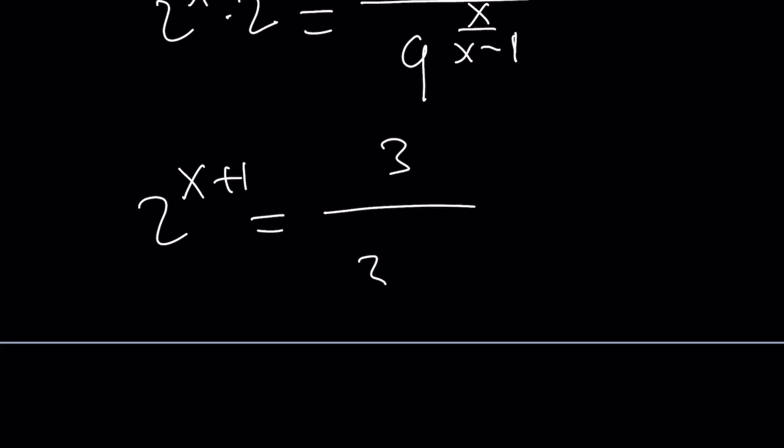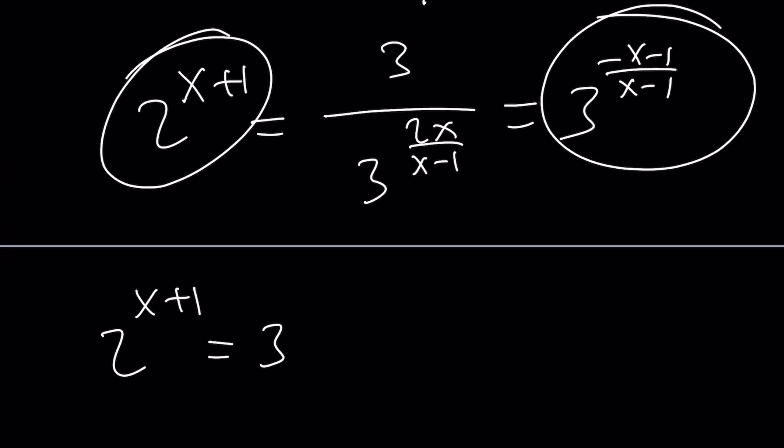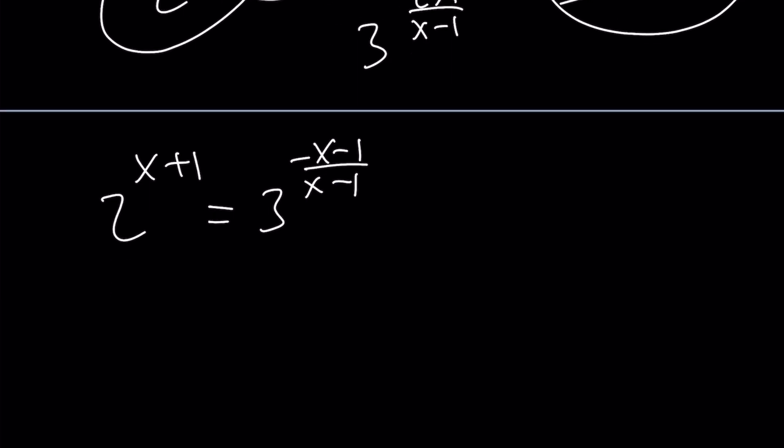And 9 is 3 squared, so we can basically write this as 2 to the power x plus 1 equals 3 divided by 3 to the power 2x over x minus 1. And then this can be written as 3 to the power 1 minus this, which is going to give us negative x minus 1 over x minus 1. Now we have this equals that, which is nice. Let me rewrite it for you. This equals 3 to the power negative x minus 1 over x minus 1.